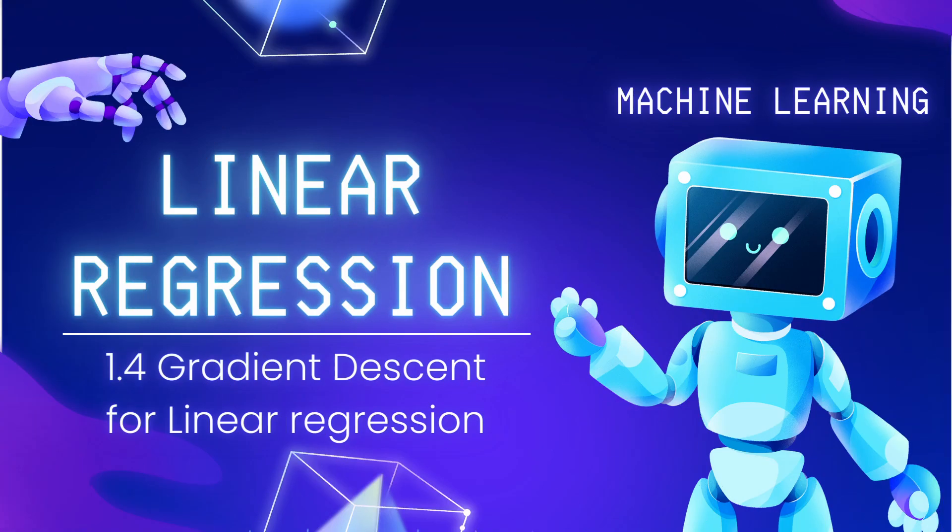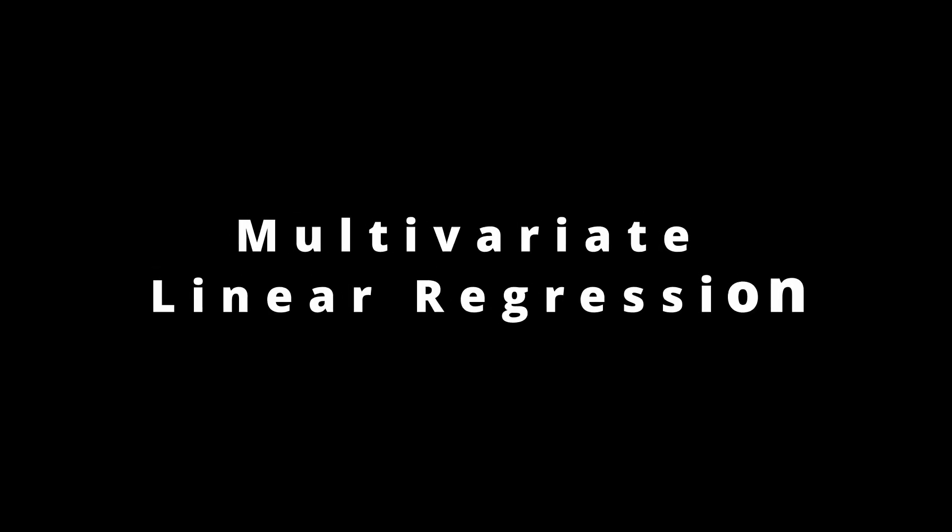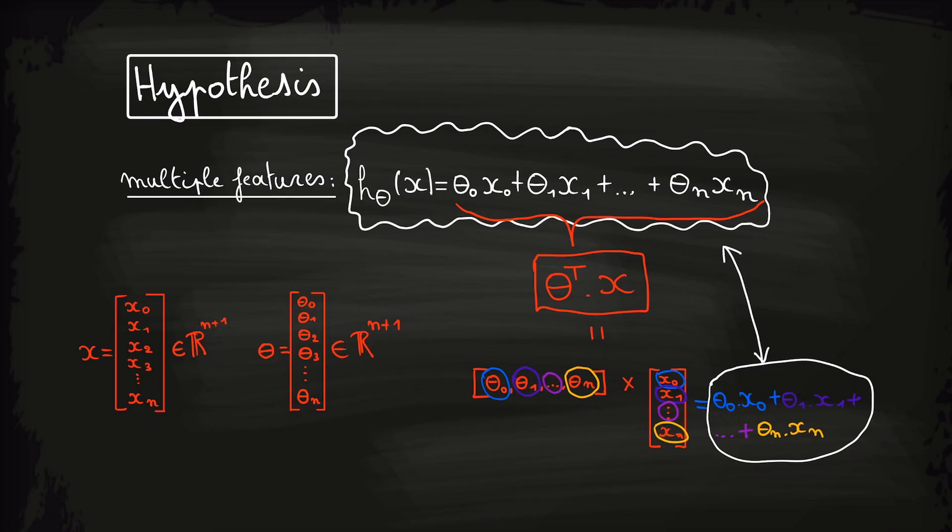Last video we extended our knowledge of linear regression to work with multiple features, also called multivariate linear regression. We simplified the notation of our hypothesis by working with vectors. So in this video, we will give a quick recap about vectors and matrices and explain why there is another great benefit to working with matrices and vectors in real-world machine learning applications.